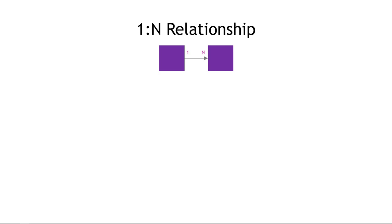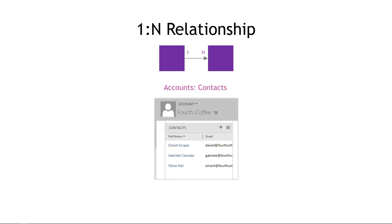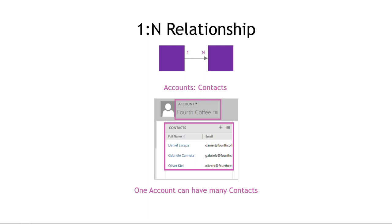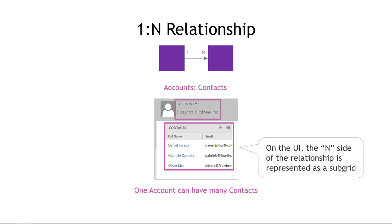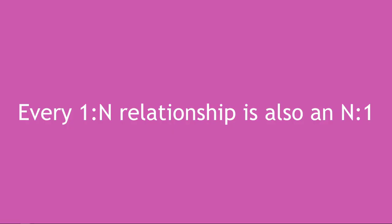Starting with the one-to-N or one-to-many relationship, an example would be accounts to contacts. One account can have many contacts — this is a screenshot of the out-of-the-box account entity in Dynamics 365. When I was learning this, it was really helpful to think about the UI. In a model-driven app, the N side of the relationship is represented as a sub-grid — the many things shown in a kind of table view.